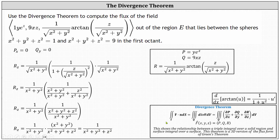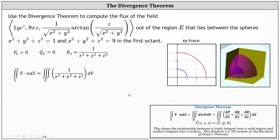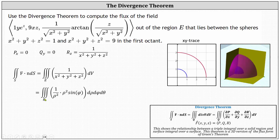Now we can set up the triple integral to determine the flux. We have the triple integral over the solid region E of one divided by x squared plus y squared plus z squared, dV. To evaluate the triple integral, we'll use spherical coordinates where dV equals rho squared sine phi d rho d phi d theta, and x squared plus y squared plus z squared equals rho squared. This gives us the triple integral of one divided by rho squared, times rho squared sine phi d rho d phi d theta.